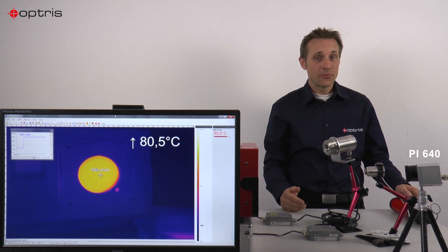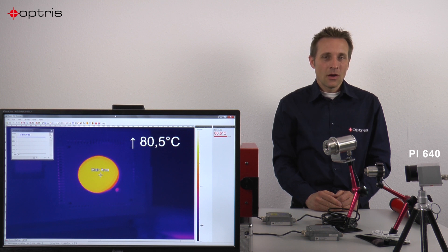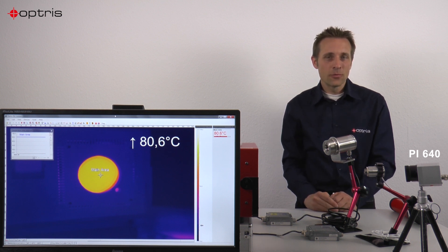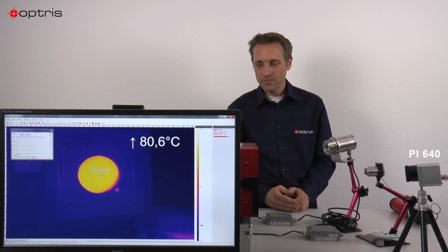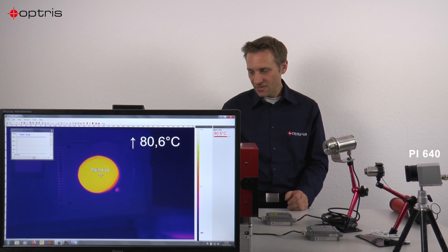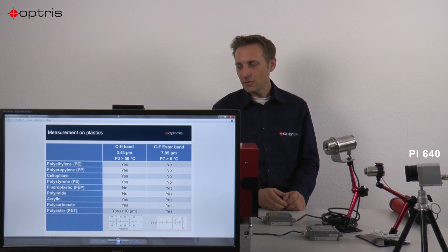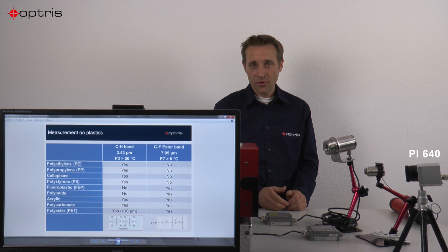So we have to be careful regarding the thickness of the material. We also have to be careful regarding the material which we want to use. Let's have a look at this table here. This table shows you some materials, and you can see that we have two types of plastic foil materials.